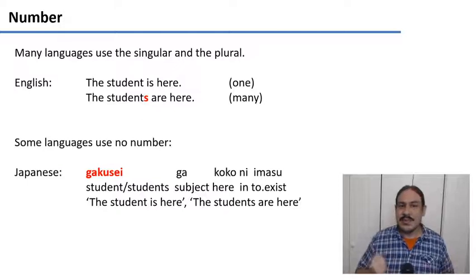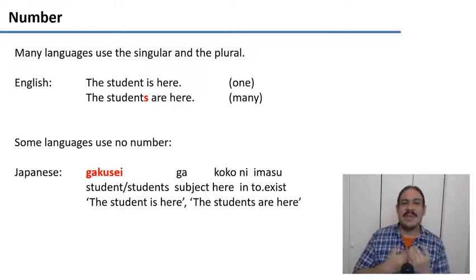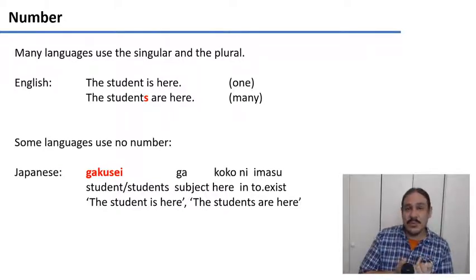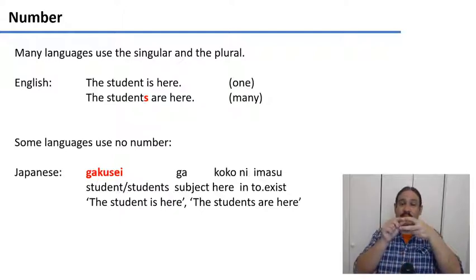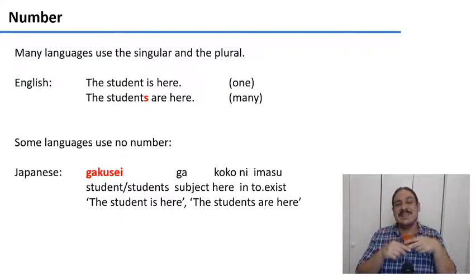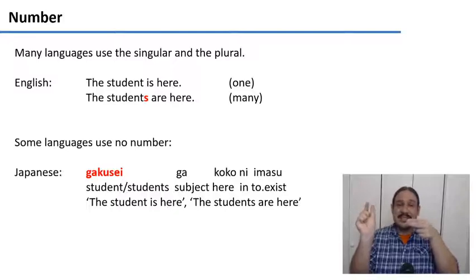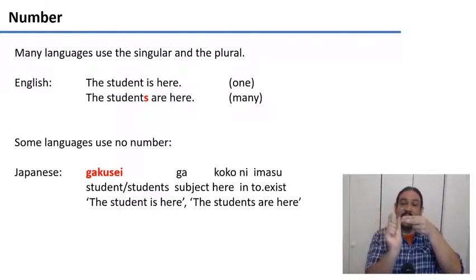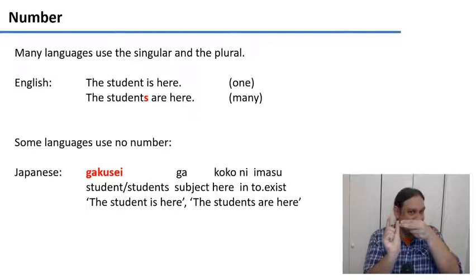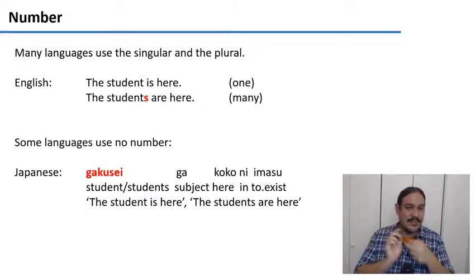Let's start with number. In many languages, you have numbers like singular and plural to distinguish between one of the noun and many of the noun. For example, in English, we have the morpheme S, which can make the difference between one student and many students — this is the singular and the plural.